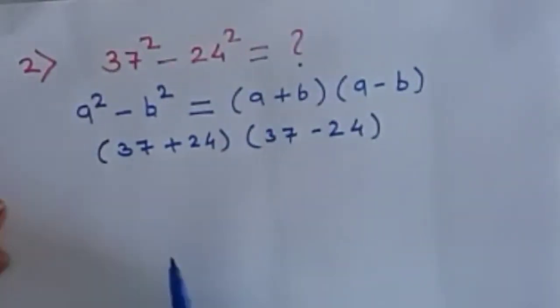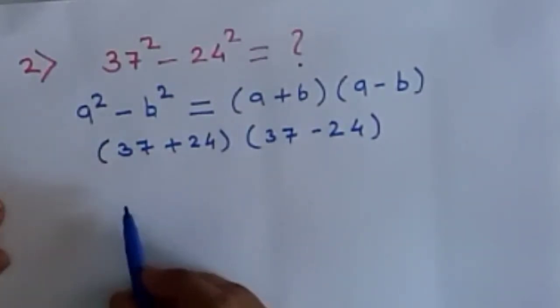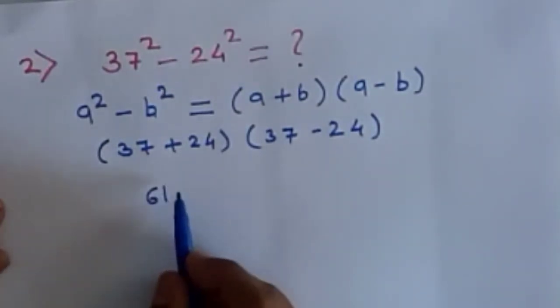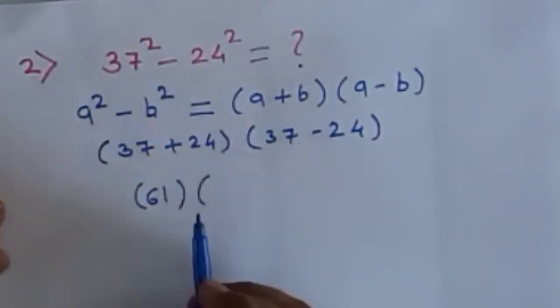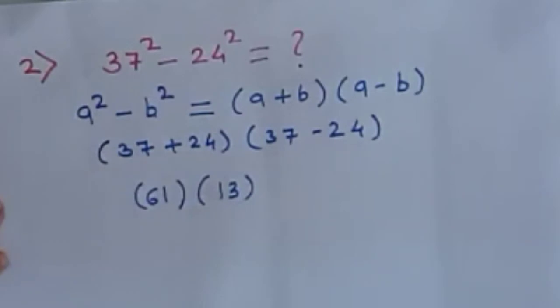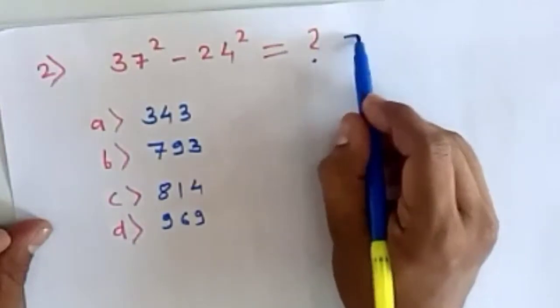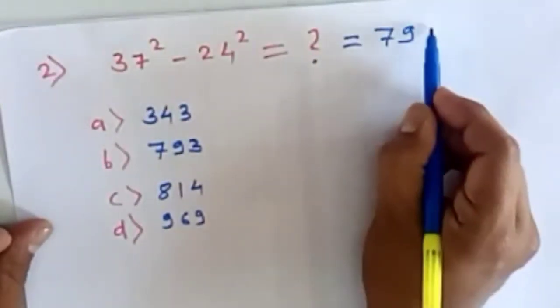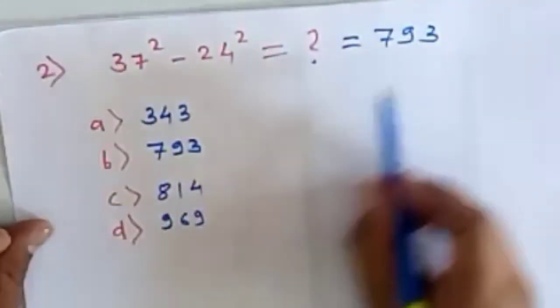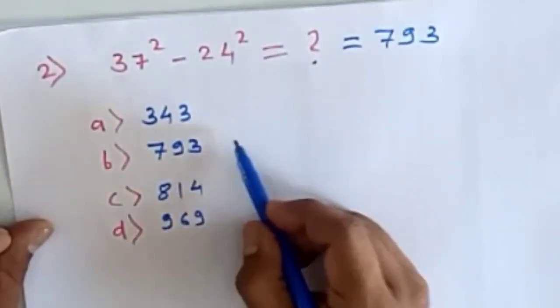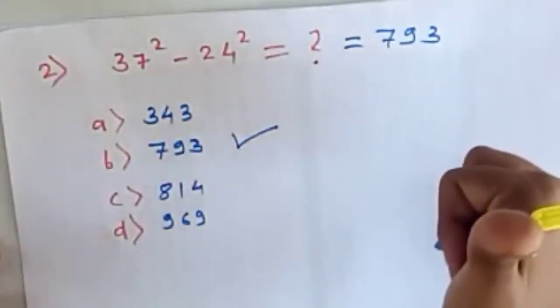By the addition of 37 + 24, we get 61, and the subtraction of 37 - 24 gives us 13. Then by performing this simple multiplication, 61 into 13, we get 793. After solving this problem, we get our answer as 793. It is option B, which is the correct option.